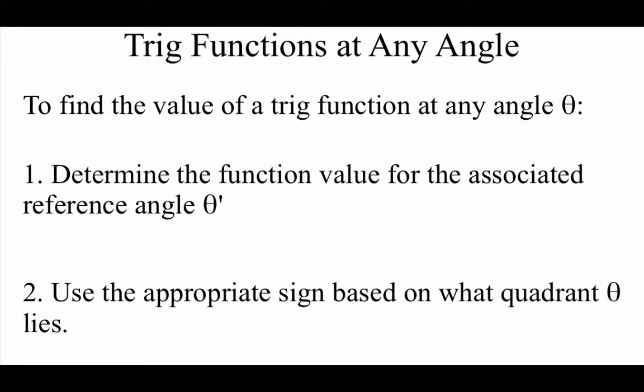because remember, those theta prime angles are first quadrant acute angles, and we're supposed to be getting to know that first quadrant really, really well. After we have that function value, number two says we might have to change the sign — positive or negative — depending on what quadrant our original angle theta is in.